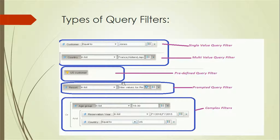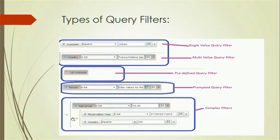Prompted query filters will prompt users to enter details when they refresh the document or report. For example, 'Enter the values for Resort' — based on the value the user enters, that data will be displayed. Complex filters involve more than one filter condition, such as filtering on age group, reservation year, or country. These multiple conditions can be combined using AND or OR operators.